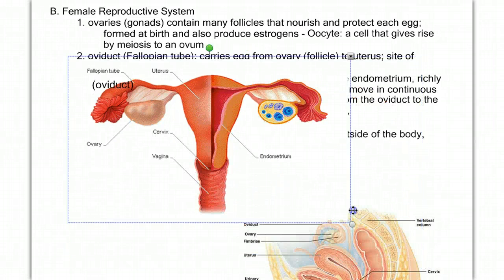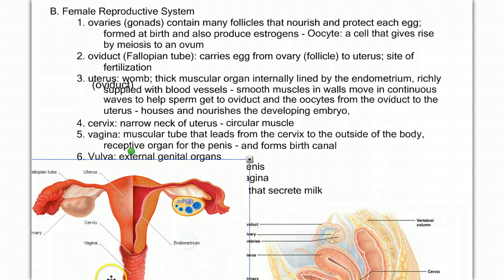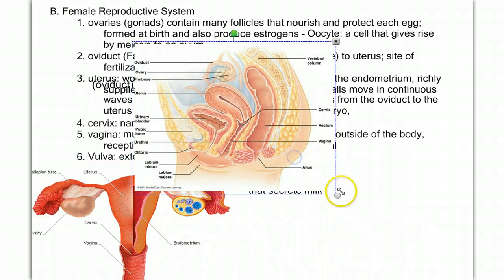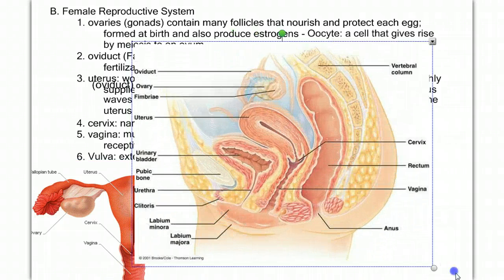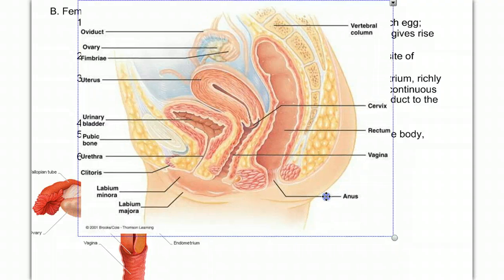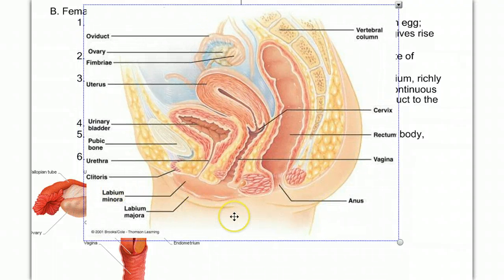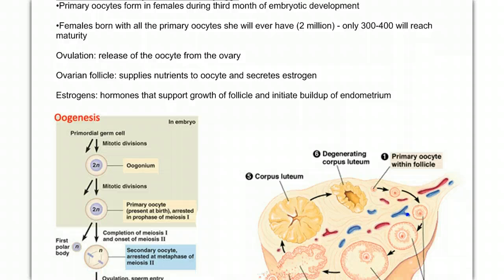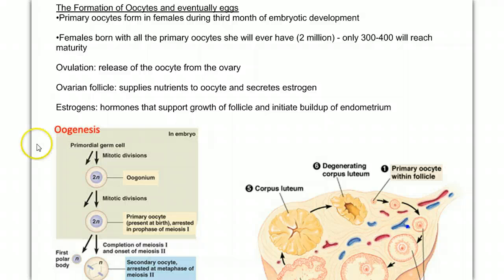Outside the vagina, we have the external genitalia, consisting of the labia and the erectile tissue, the clitoris. Let's take a moment to focus on the ovaries and the process by which eggs are produced and released. Egg production is called oogenesis, or the creation of eggs.